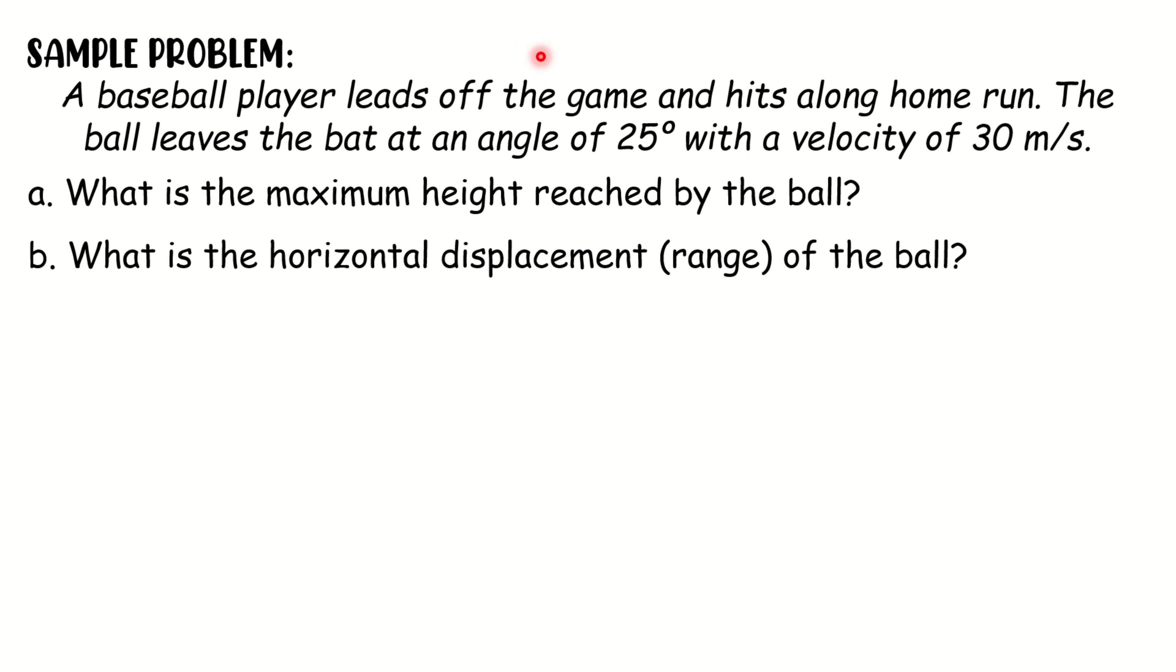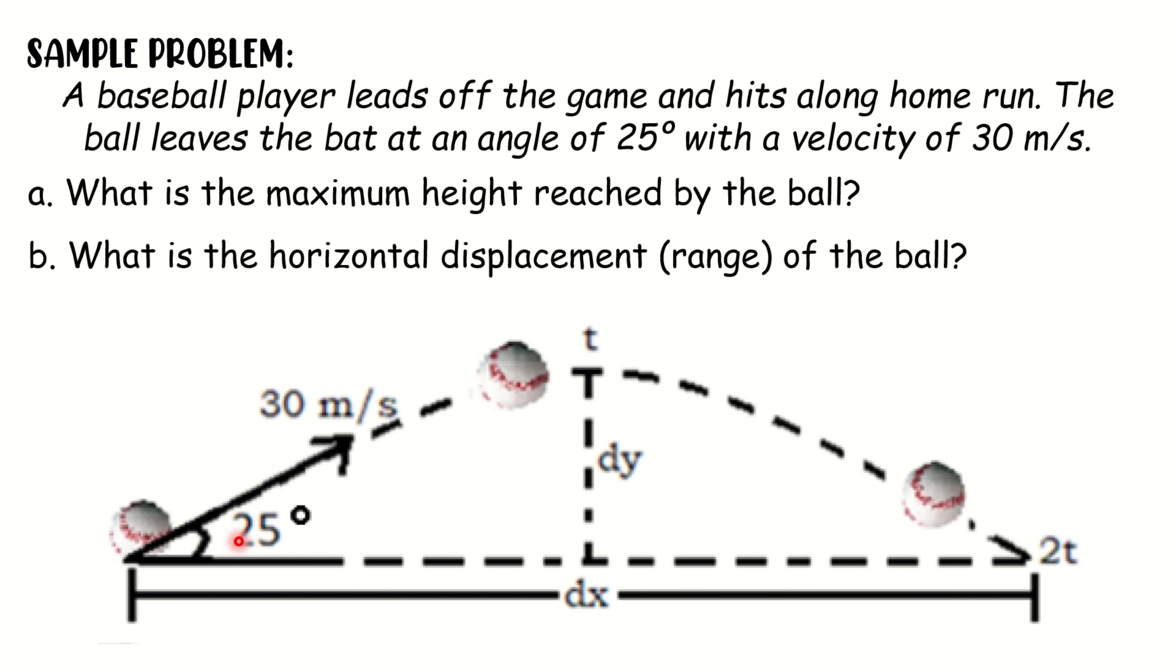A baseball player leads off the game and hits a long home run. The ball leaves the bat at an angle of 25 degrees with a velocity of 30 meter per second. Let us find the maximum height reached by the ball and the horizontal displacement or range of the ball. Let us illustrate the problem. As you can see, we have an angle of 25 degree and a velocity of 30 meter per second. We are looking for the maximum height reached by the ball and the horizontal displacement or range or dx of the ball. Let us try to solve this problem.